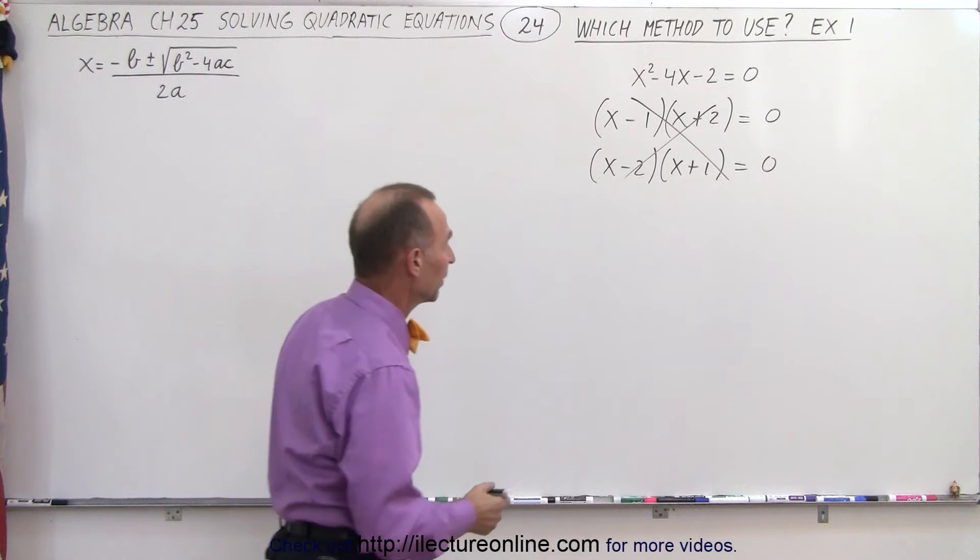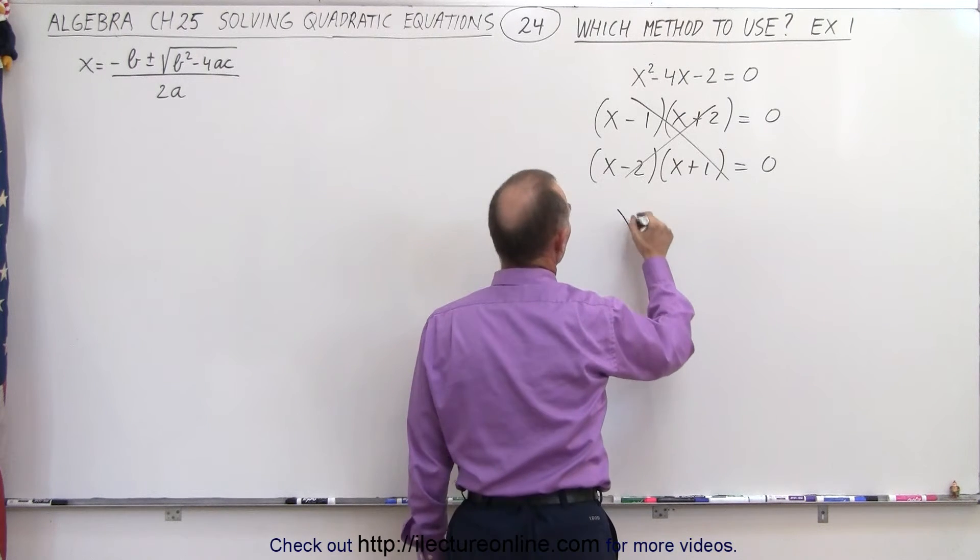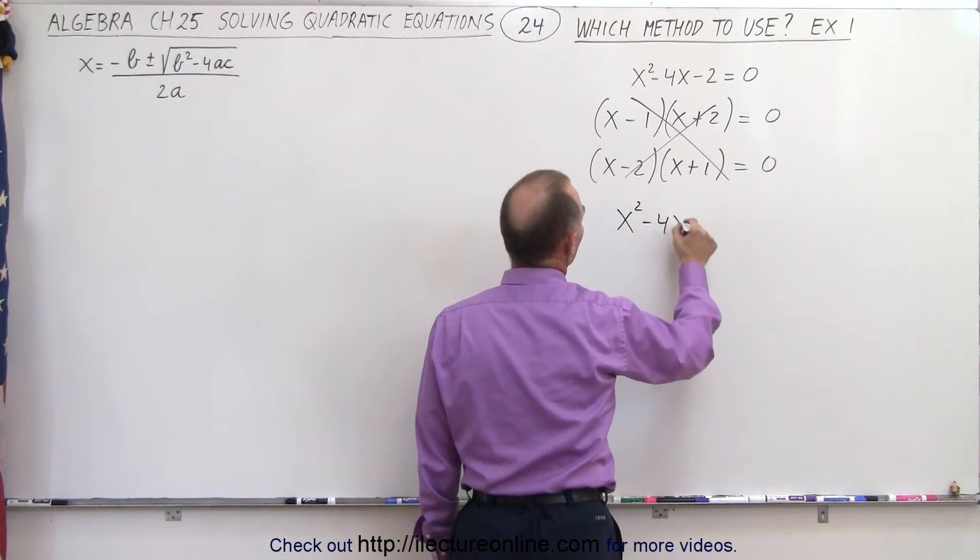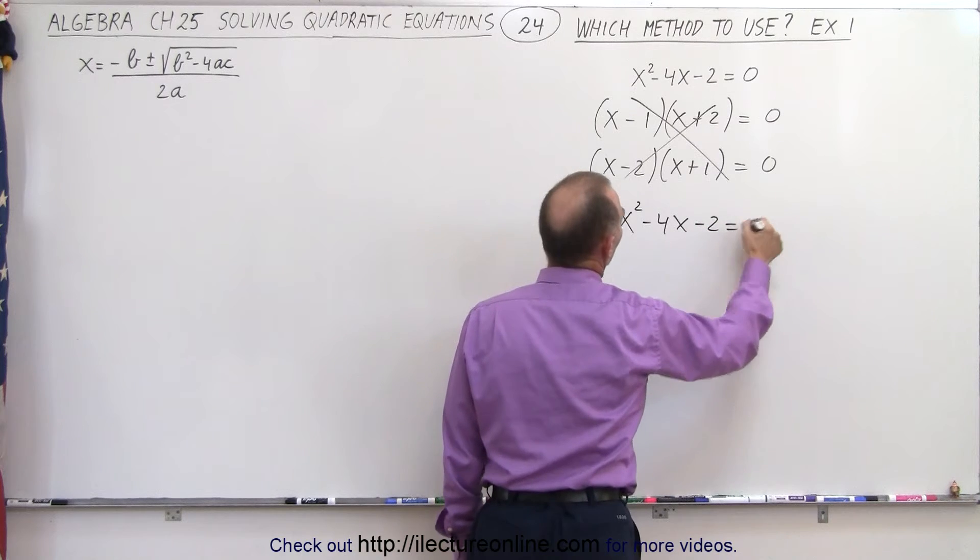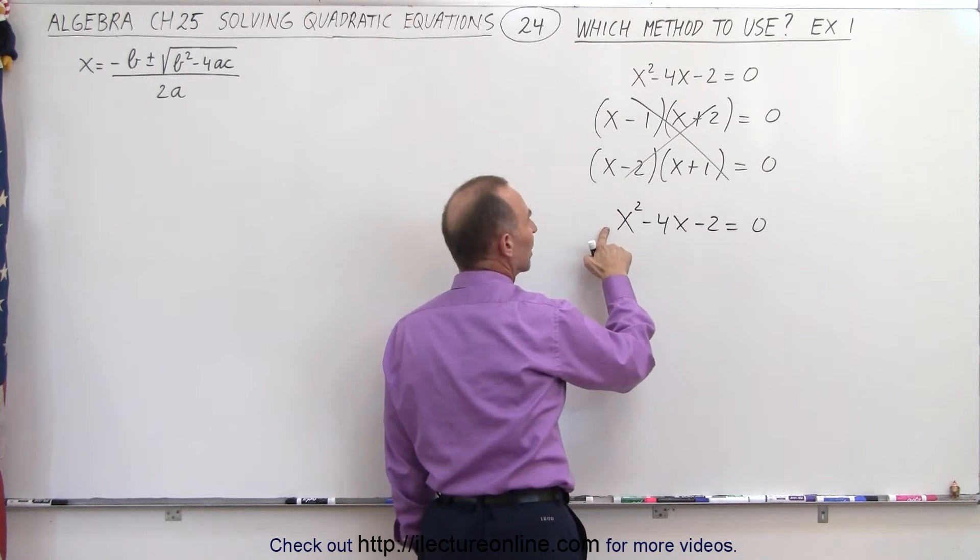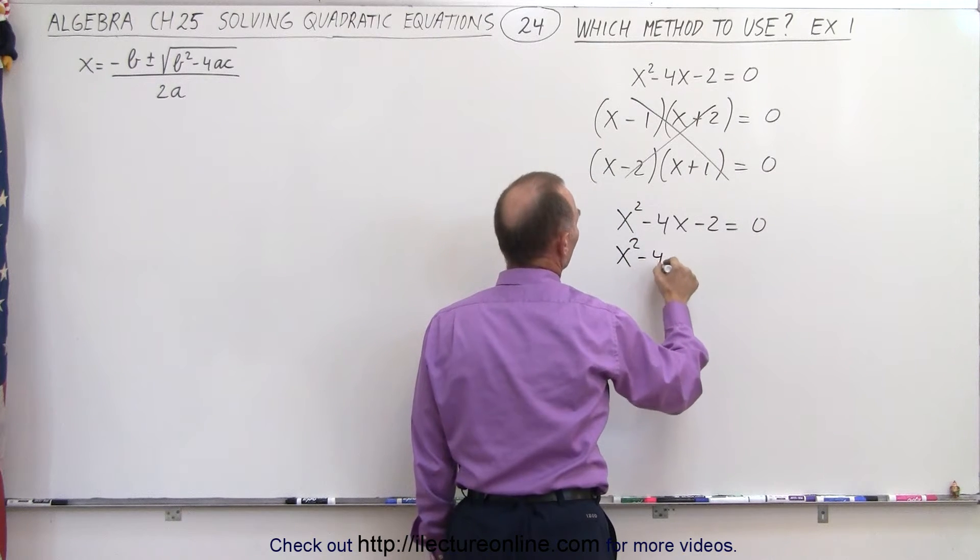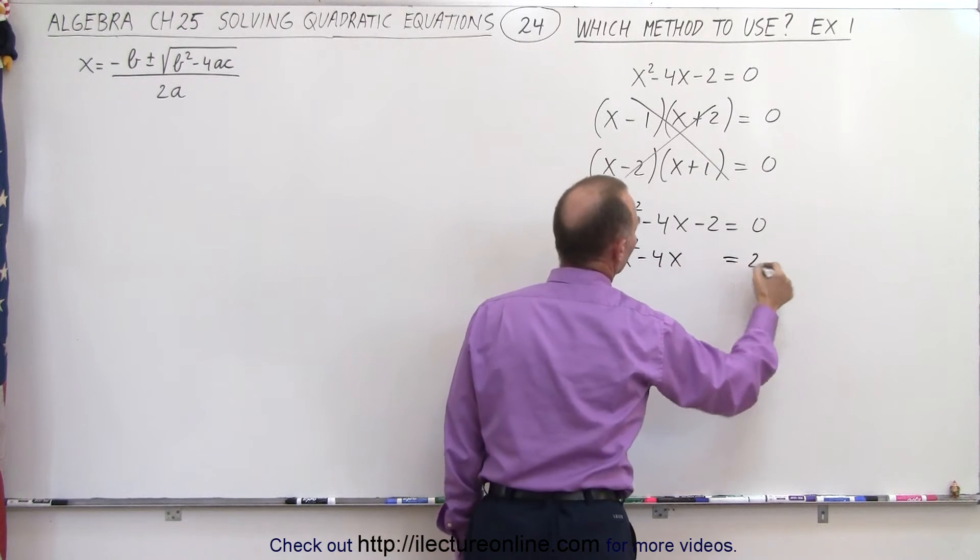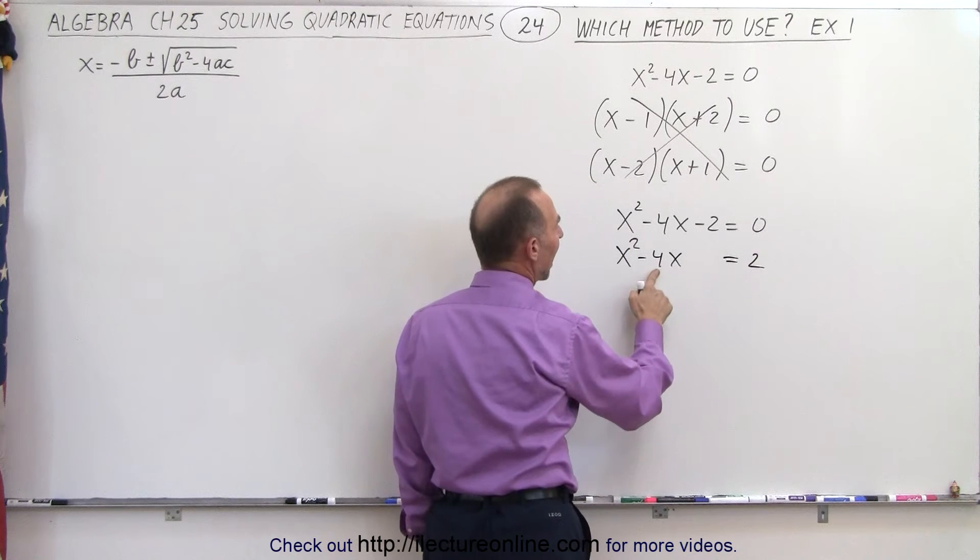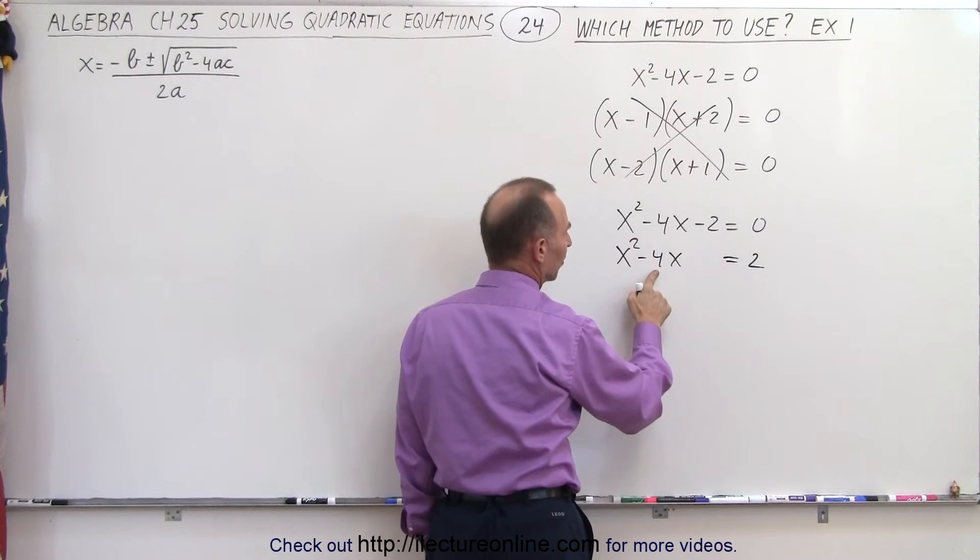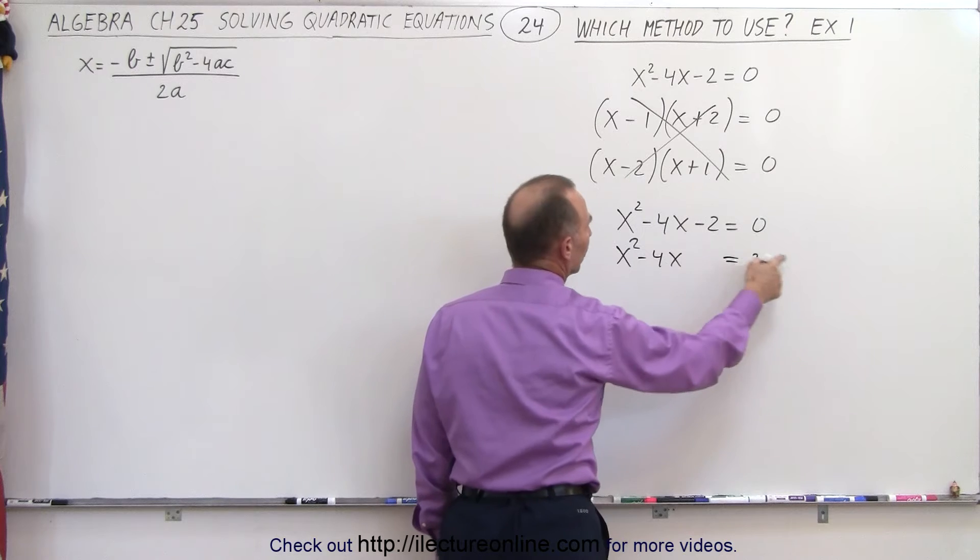How about completion of the square method? Well, we can try that. So we have x squared minus four x minus two equals zero. Since we have a one in front of the x squared term, the first step will be moving the two across. So we have x squared minus four x is equal to a positive two. Then we take half the middle term or half the coefficient of the middle term and squared and add it to both sides.